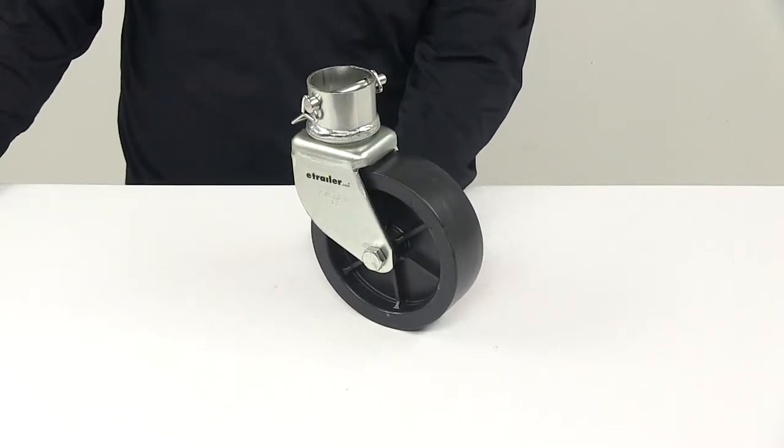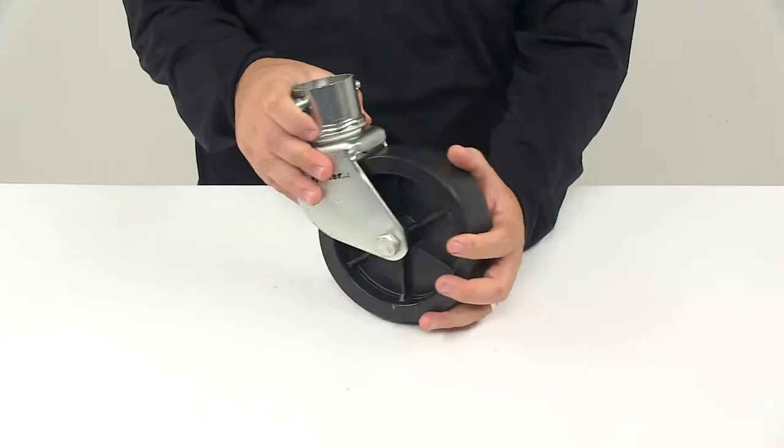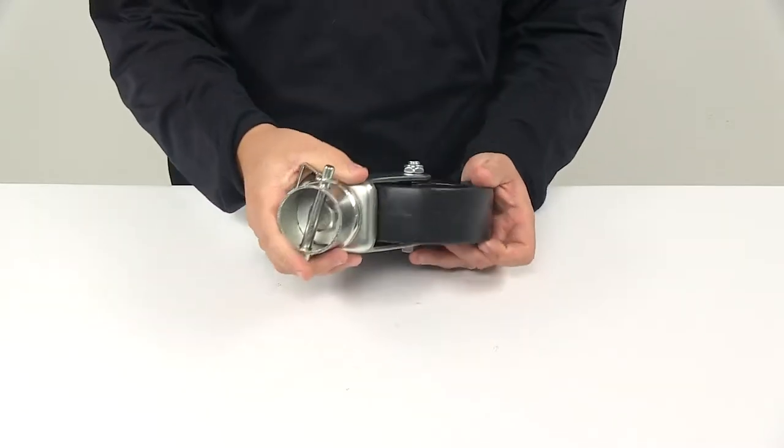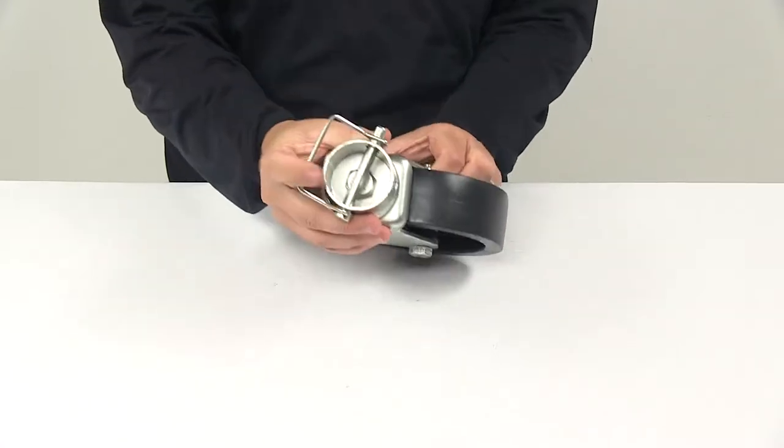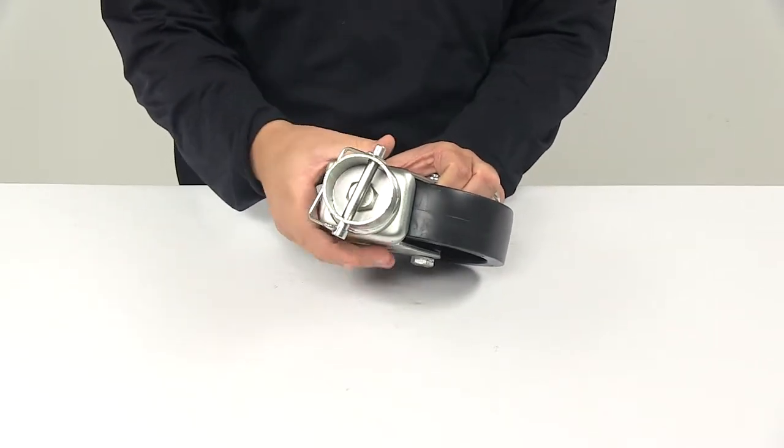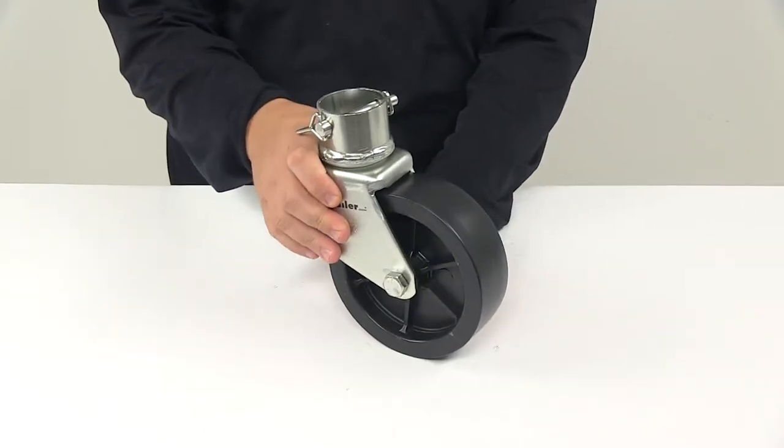Today we're taking a look at the Bulldog removable 6 inch poly caster assembly for 2 inch jack tubes. This caster assembly fits jacks with a 2 inch round inner tube in a 2,000 pound to 5,000 pound capacity.